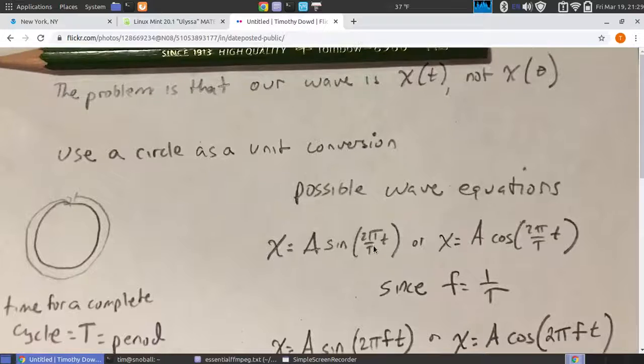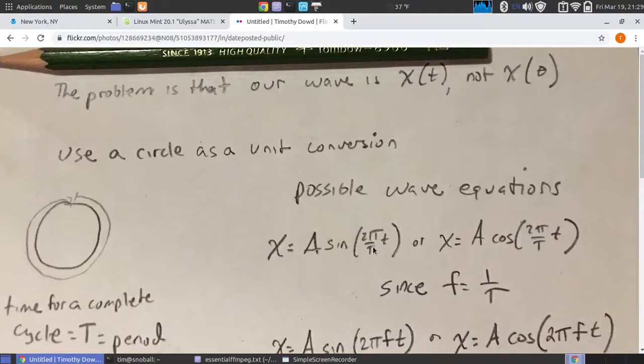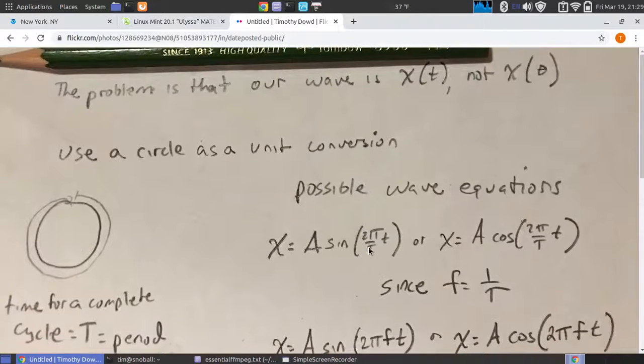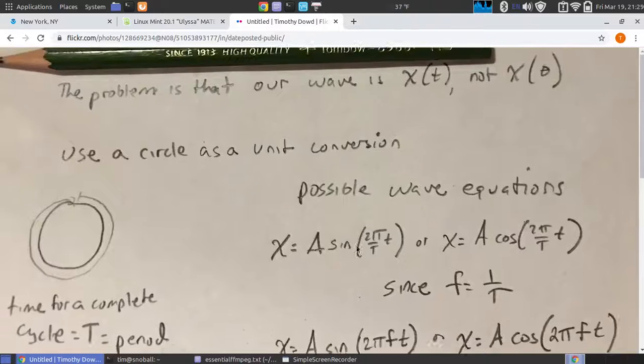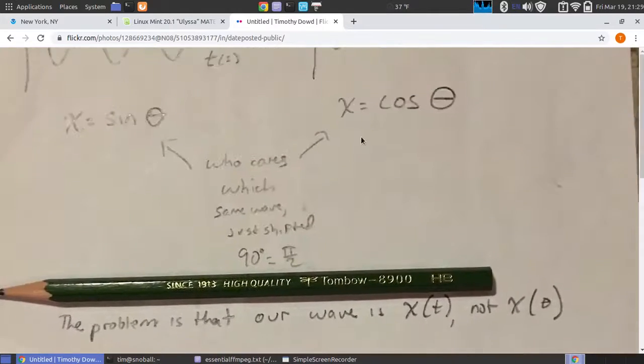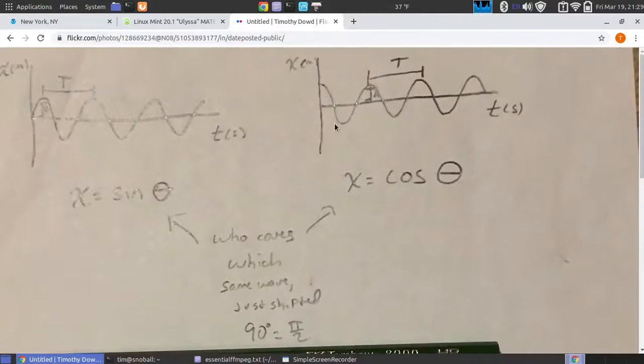It includes the period - the time between successive peaks or the time for a complete cycle - and the amplitude, which is how large the peaks and valleys are.